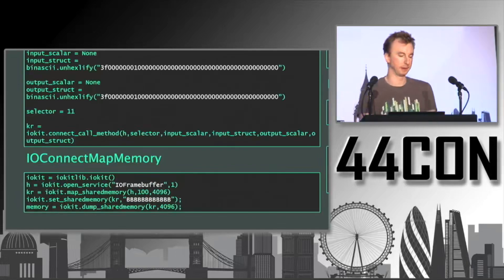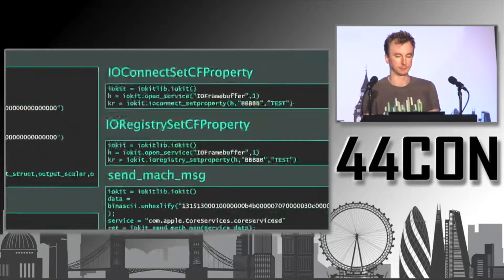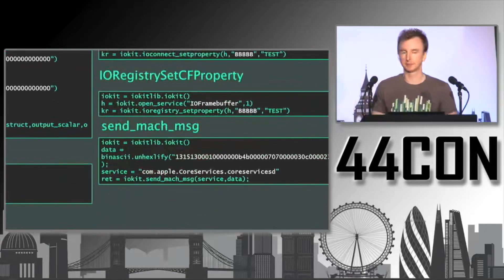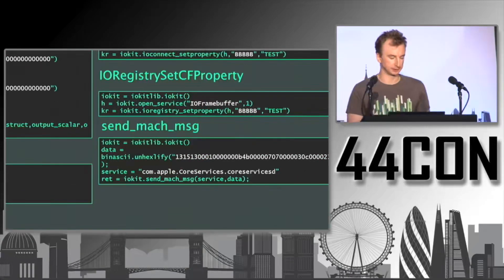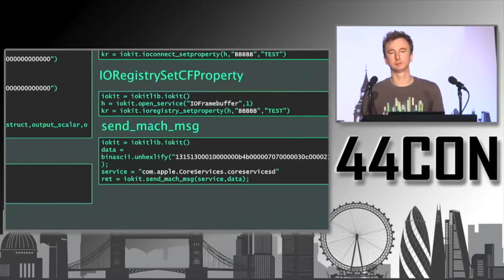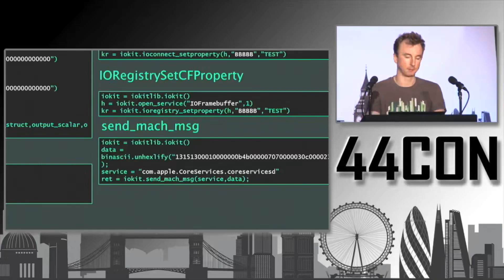I wrote wrappers for the different common vulnerability classes and common methods: mapping shared memory, setting IOKit registry properties, and also sending Mach messages. The Mach side involves a big IPC subsystem for sending messages from a low-privileged process to a high-privileged process across trust boundaries, which you can use to exploit higher-privileged services.